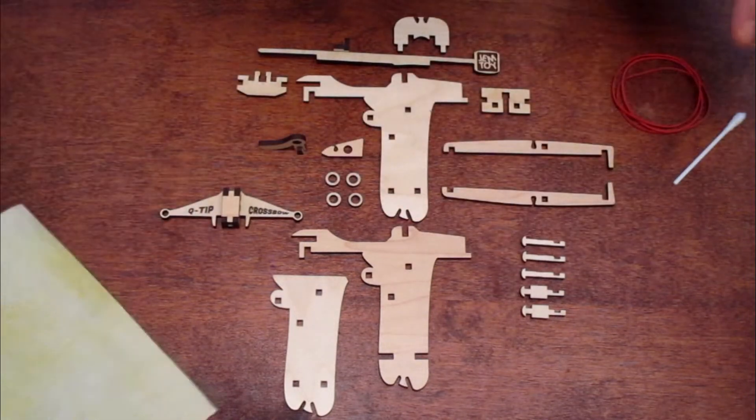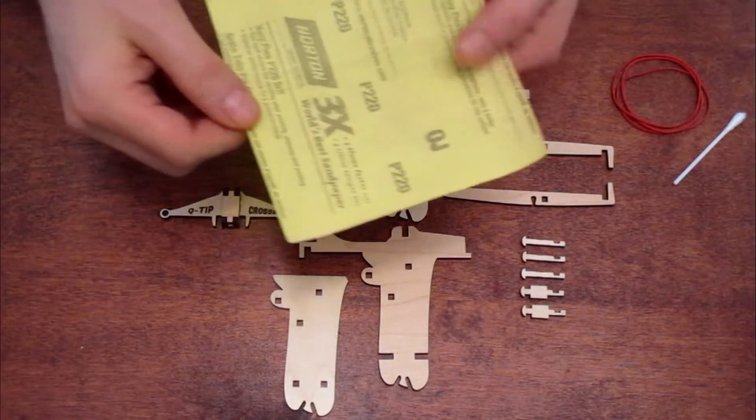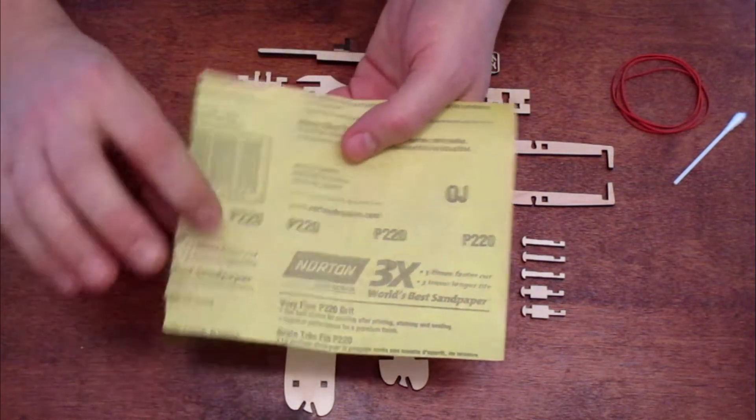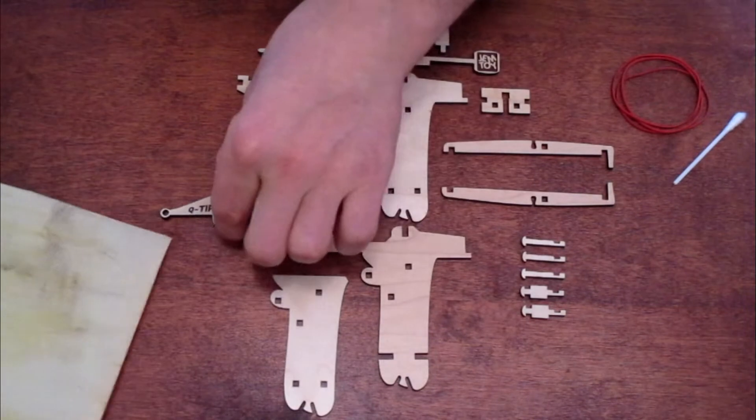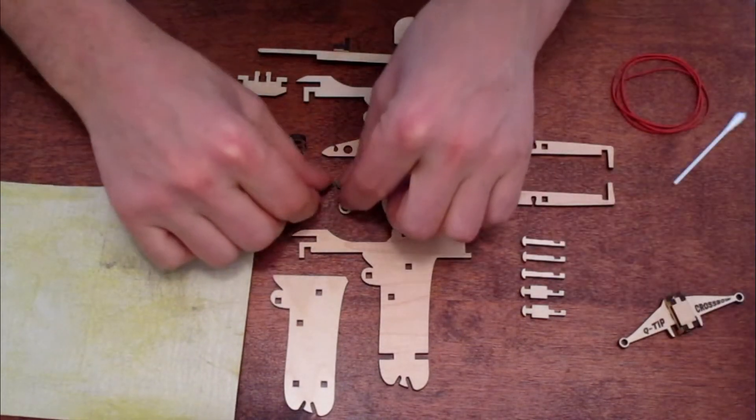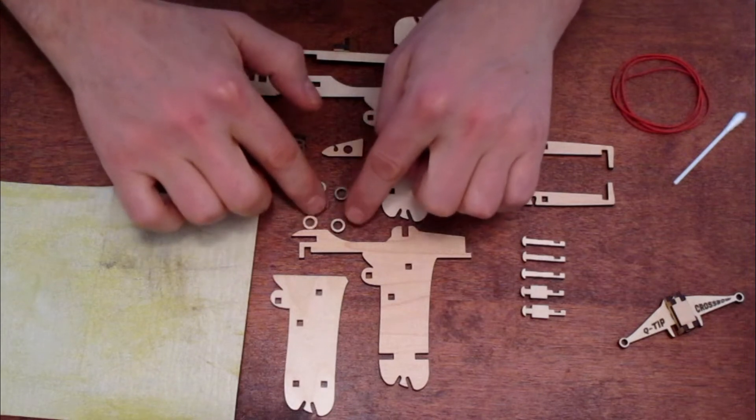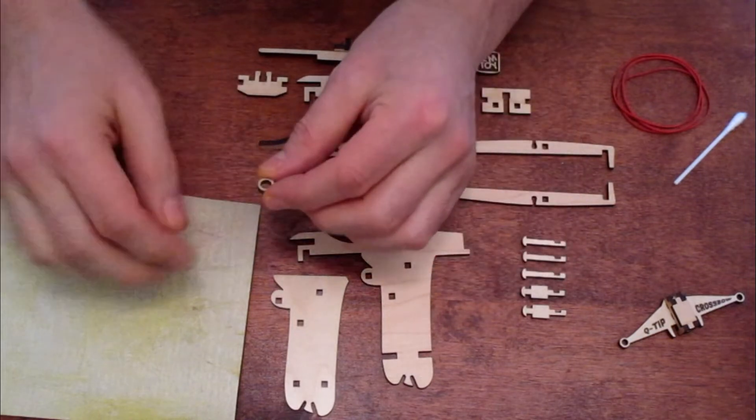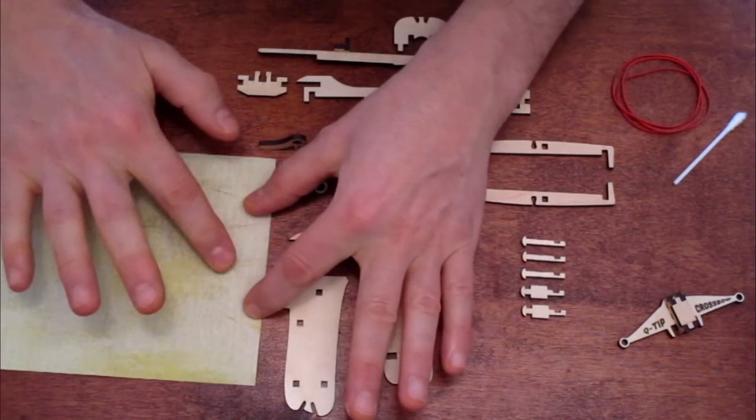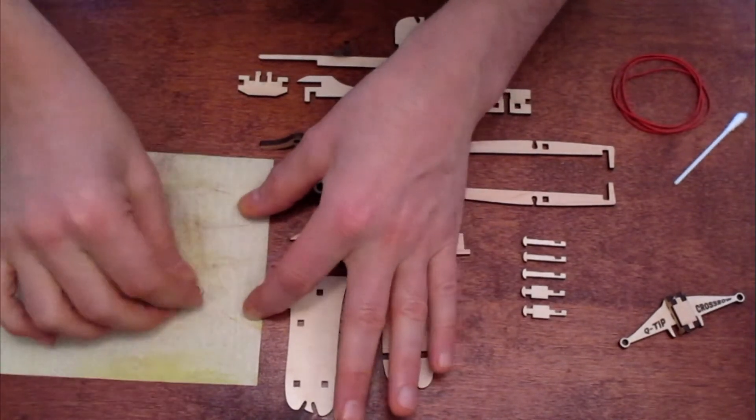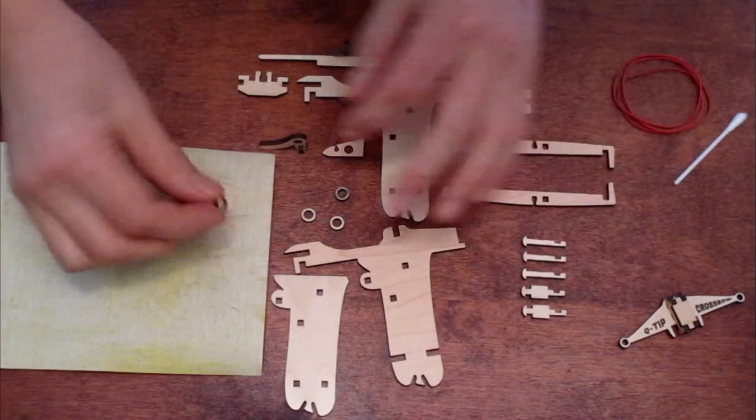So now the next thing to do is you need some sandpaper. And this is 220. So I've got 220, which is a very gentle sandpaper. And these washers need to be slightly thinner than the rest of the wood. So I'm literally going to sand this down like a millimeter. So I'm going to put this on here. I'm going to put my finger on here. And I'm just going to sand each one of these little circles down.